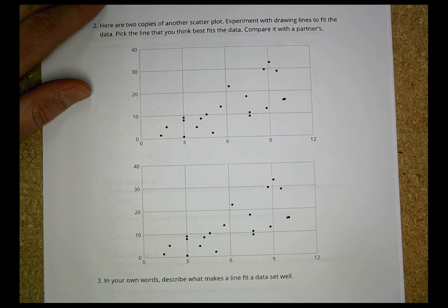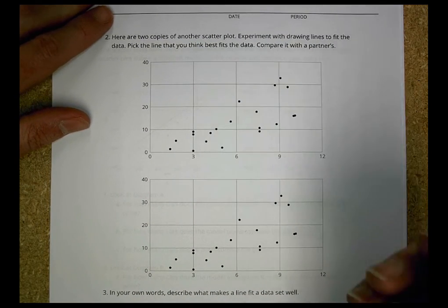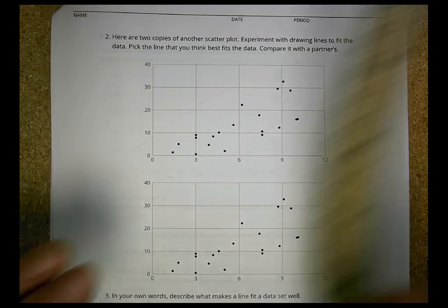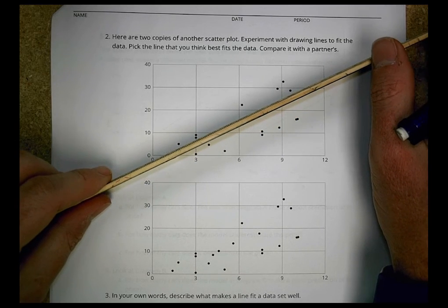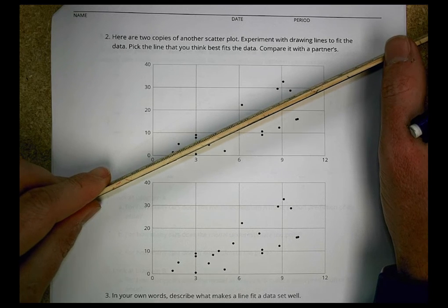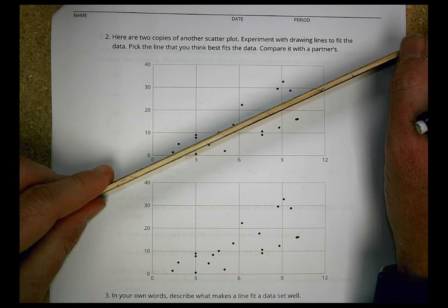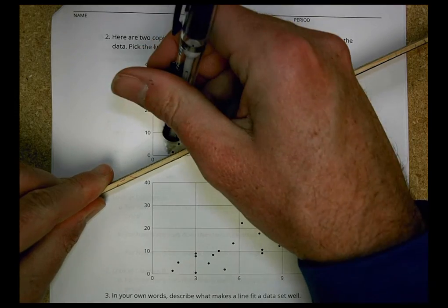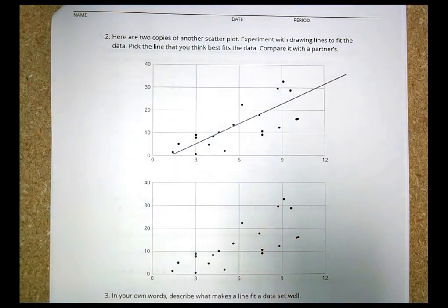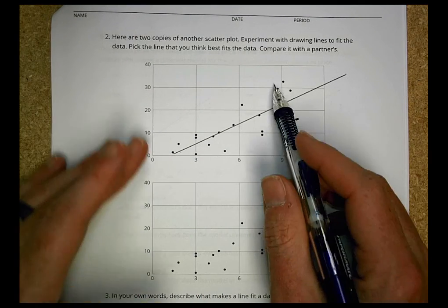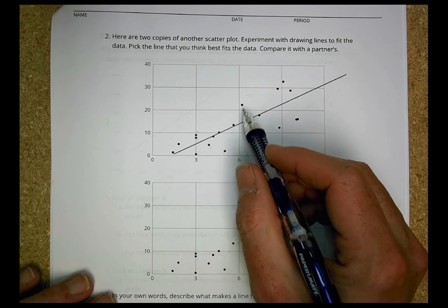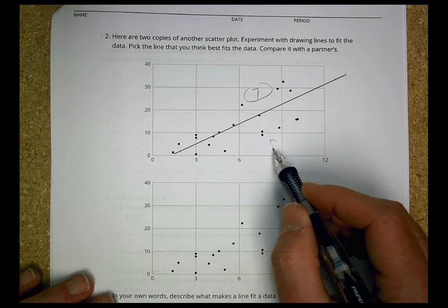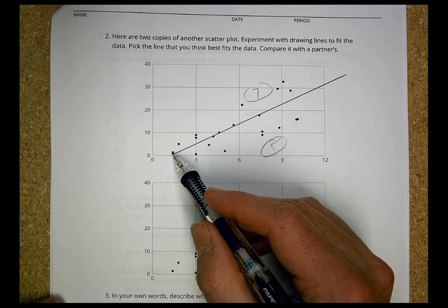Here's another scatter plot — two copies of the same one. Experiment with drawing lines of fit for the data and check with your partner. Wherever you draw that line, it will have an impact on the slope. The idea is to put it about in the middle. Maybe I draw it like this and say that's about middleish — I have a couple points here, some below, some above. I count about eight below it and seven above it, so that's pretty close.